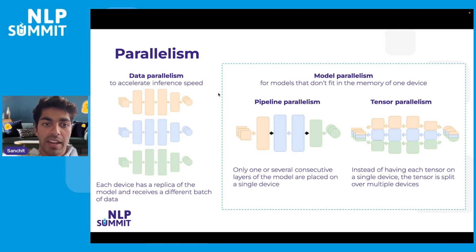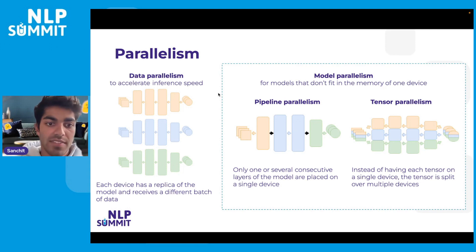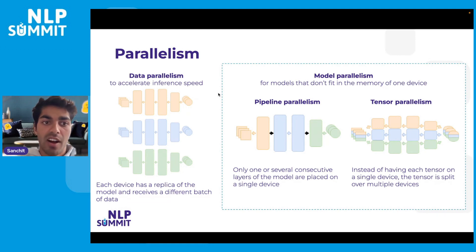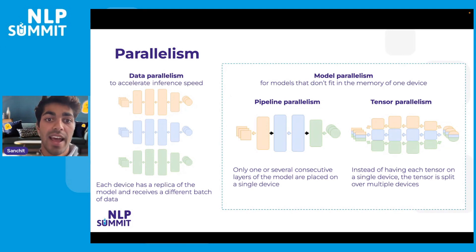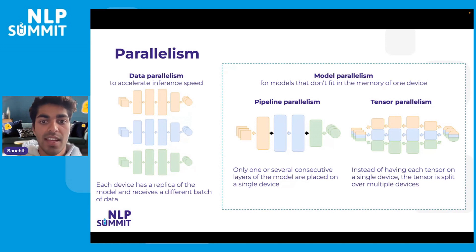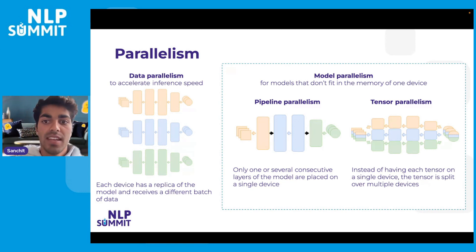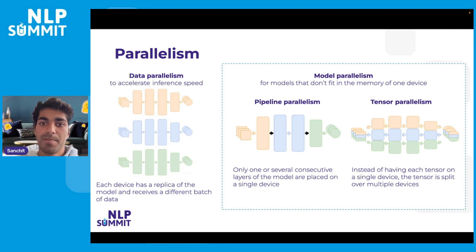The first form of parallelism is data parallelism, where we take our model and replicate it across hardware devices. We're not changing the model structure, but copying it across devices, then sending a different batch of data to each device and running a forward pass in parallel. This accelerates inference speed. Our second form is model parallelism, for models that don't fit on one device. There are two sub-forms: pipeline parallelism, where consecutive layers are split across devices, and tensor parallelism, where tensors are split over multiple devices — and it's tensor parallelism that really enables us to use such large language models.